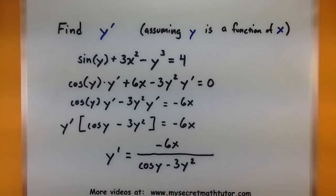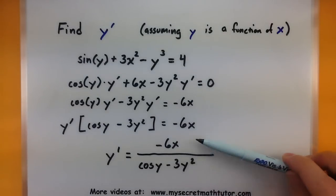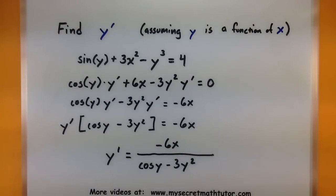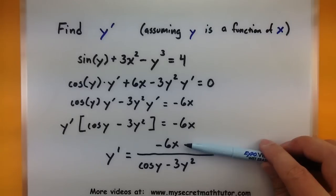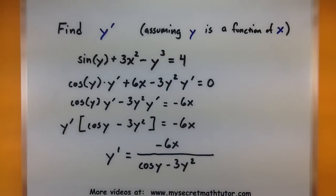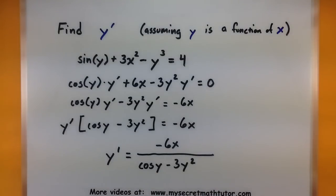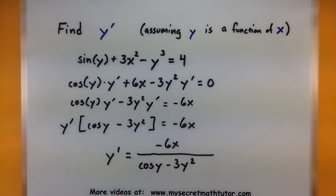So when it all boils down, what you're doing with implicit differentiation is still finding the derivative of y with respect to x. But what you see in the derivative often requires knowing information about x values and y values, whereas with a normal derivative of a function with just x's in it, all you need to know is the x values. Remember that implicit differentiation is all about thinking about the chain rule, and you'll do just fine. If you'd like to see more videos, please visit MySecretMathTutor.com.